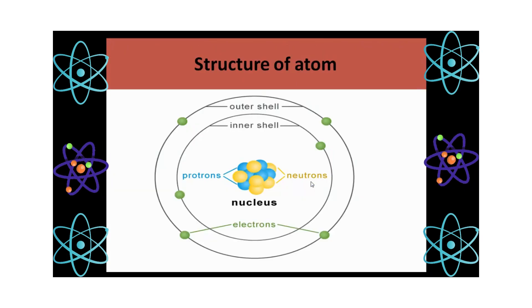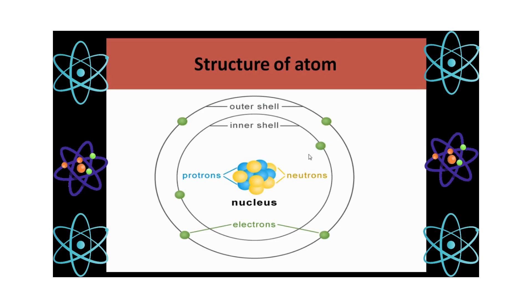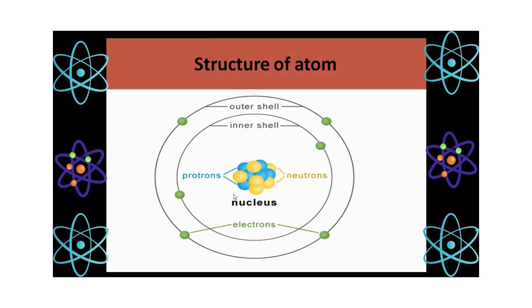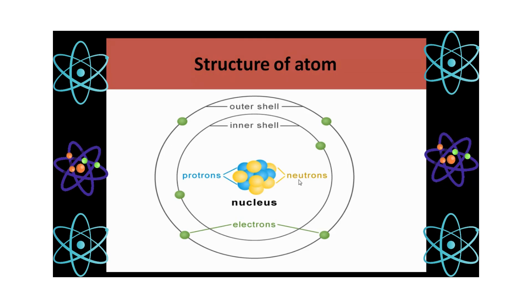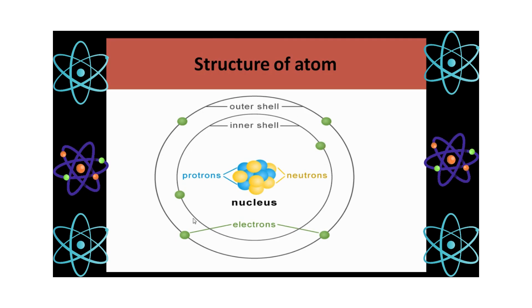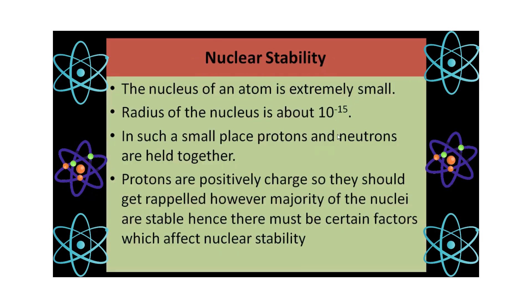Let us first understand the structure of atom. As we know, at the center of the atom, protons and neutrons are present. Protons and neutrons together are called the nucleus. In the nucleus, protons are positively charged and neutrons have no charge. Electrons, which are negatively charged particles, revolve around the nucleus in a fixed definite orbit. That is all about the structure of atom.